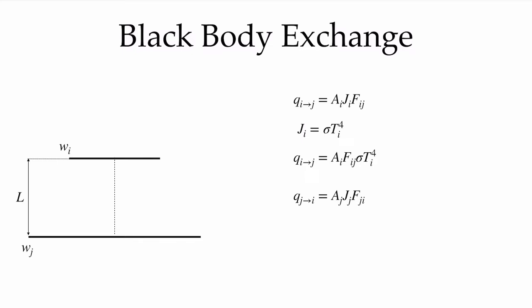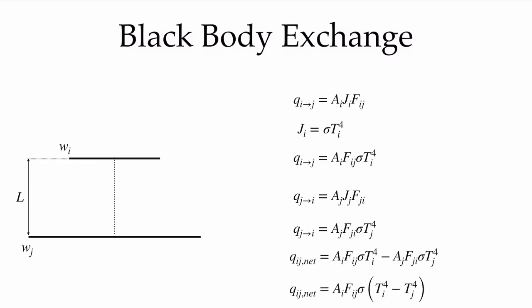qji can be written similarly for the radiation leaving surface j and going to surface i, with the view factor Fji and the area of surface j. The net exchange between them is the difference between the two, or simply the area of surface i times Fij times σ times the difference of temperatures to the fourth power.